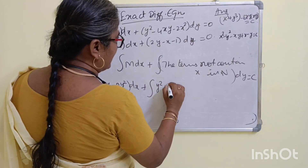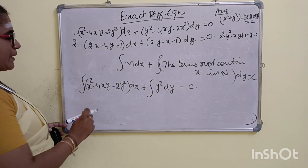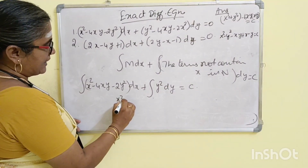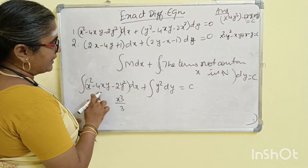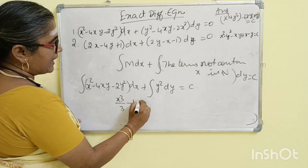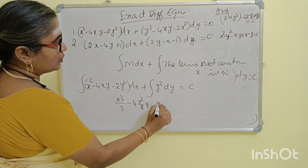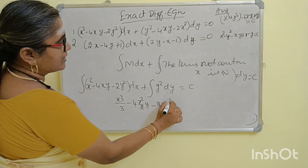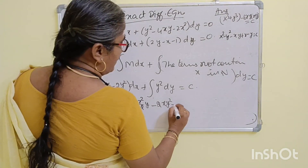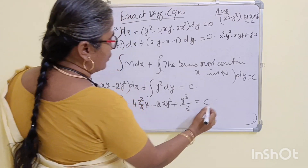y squared, y equal to C. Now integrate: x squared dx is x cubed by 3. Minus 4 times x squared by 2, times y, minus 2y squared constant, gives 2xy squared plus y cubed by 3, equal to C.